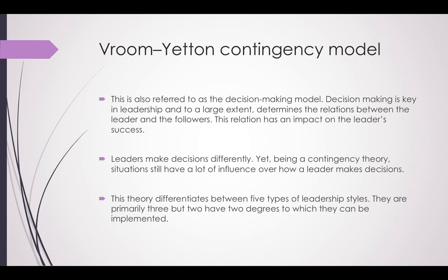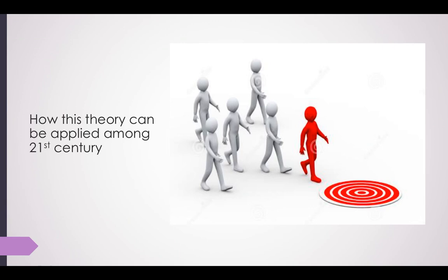The last part is how this theory can be applied in the 21st century. Contingency theory has many applications in the organizational world. The first one: it can be used to assess the effectiveness of an individual in a particular role and look at the reasons for one's effectiveness or ineffectiveness.